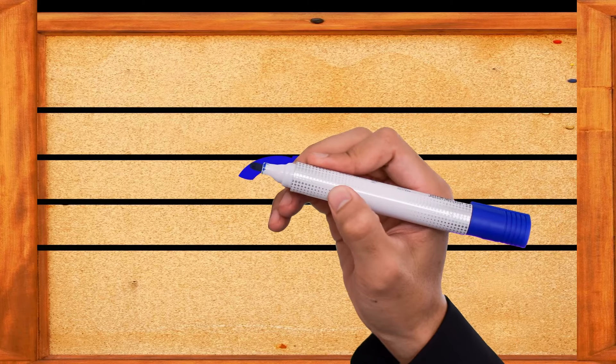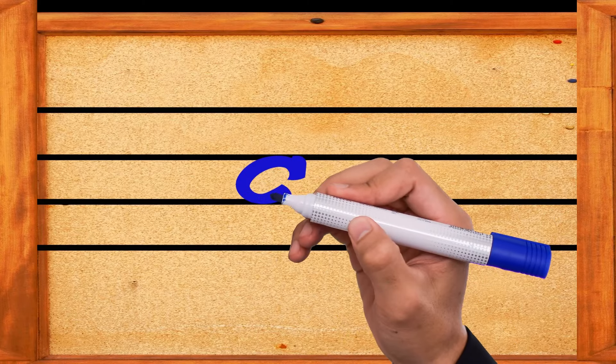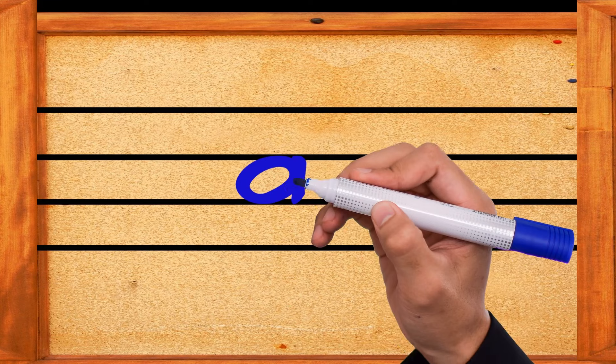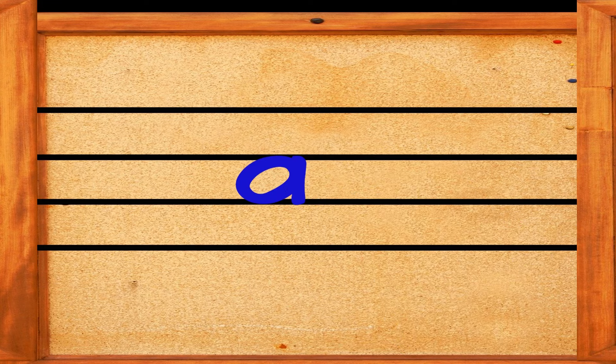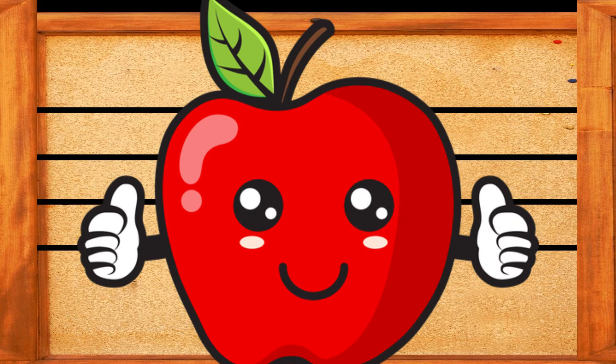Round and round, make a small curve, then go up and then come down. This is the letter A. A is for apple.